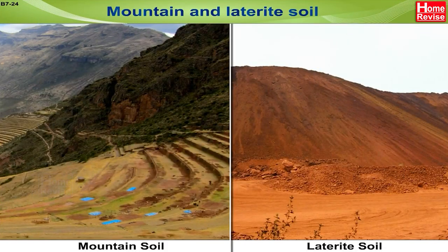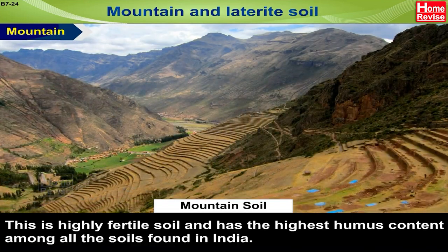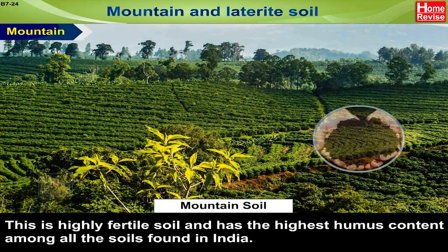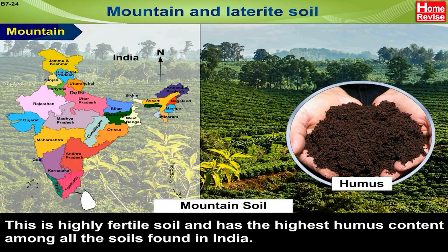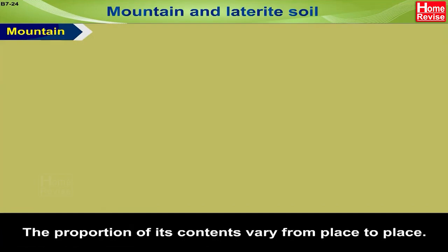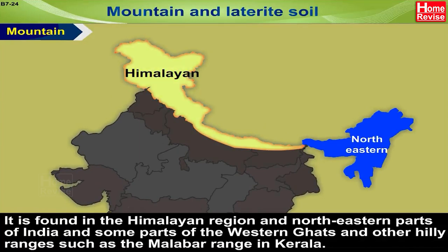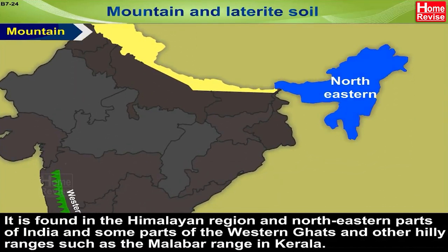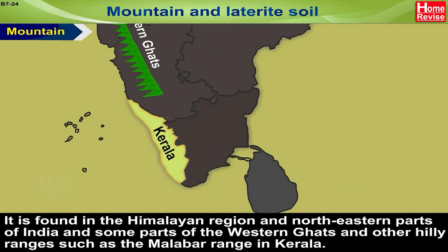Mountain Soil: This is highly fertile soil and has the highest humus content among all the soils found in India. The proportion of its contents varies from place to place. It is found in the Himalayan region, northeastern parts of India, and some parts of the Western Ghats and other hilly ranges such as the Malabar range in Kerala.